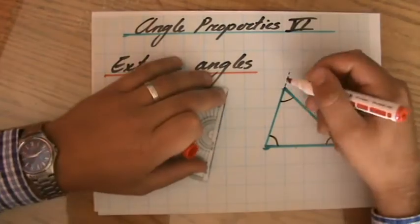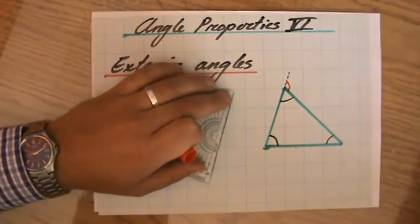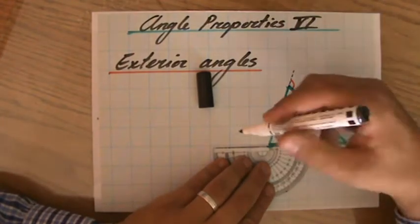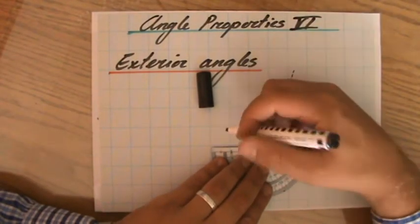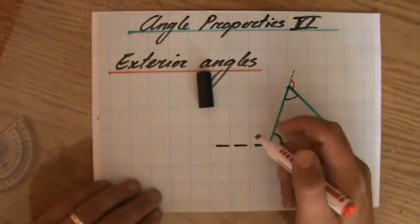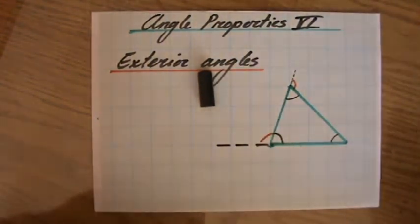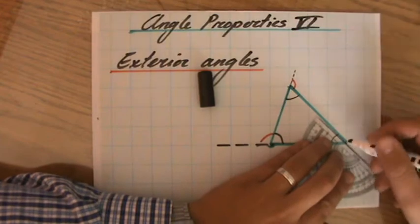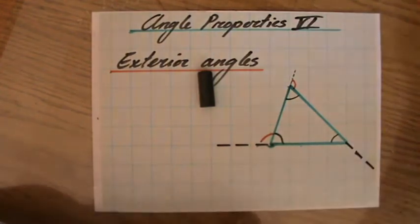This would be the exterior angle. If black is the interior angle and I extend the line a little bit longer, then red will be the exterior angle. Same here - you just have to extend the line to find or see the exterior angle.